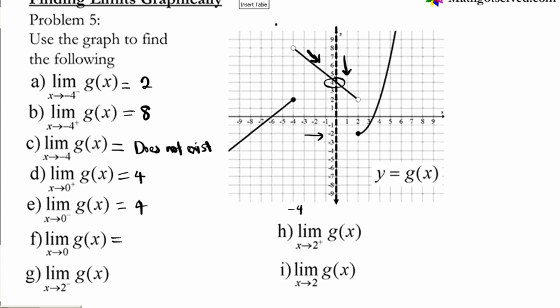Double-sided limit: since these two one-sided limits are the same, that means the limit as x approaches 0 is simply 4.